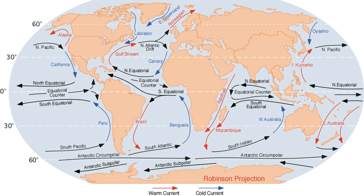On their journey, the water masses transport both energy and matter — solids, dissolved substances, and gases — around the globe. As such, the state of the circulation has a large impact on the climate of the Earth. The thermohaline circulation is sometimes called the ocean conveyor belt, the great ocean conveyor, or the global conveyor belt. On occasion, it is imprecisely used to refer to the meridional overturning circulation.